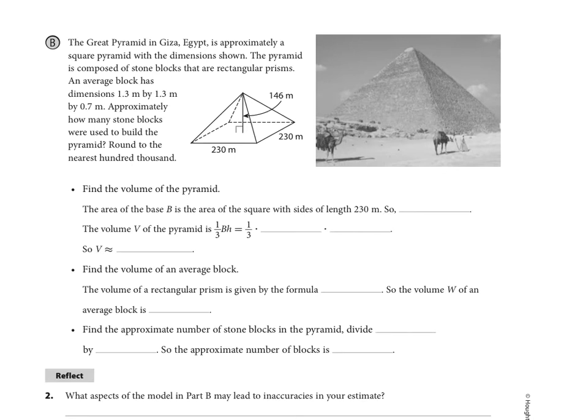The blocks themselves are 1.3 meters by 1.3 meters by 0.7 meters in dimensions. We want to know approximately how many stone blocks were used to build the pyramid. So the ancient Egyptians that enslaved the Hebrews to make this pyramid, how many of those huge blocks did they have to carve out and stack in order to make this ancient wonder of the world. We're going to find that three-step process happening. First, find the volume of the pyramid, then find the volume of just one block, and then divide them. So let's walk through that together.